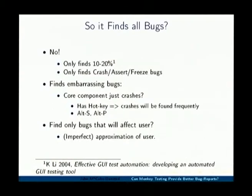On the other hand, monkey testing doesn't find all bugs. There's a paper suggesting that monkey testing only finds 10 to 20% of bugs. And it tends to find crash and assert bugs — these hard bugs with very technical definitions. But I think these are perhaps the most important bugs, because when users do something simple like saving and it crashes, and then 100 other users have the exact same problem, they just think 'what's the point in reporting bugs?' Monkey testing provides an approximation of a user because users often use frequently-used functions that have hotkeys, and those will be tested very frequently by the monkey testing software.